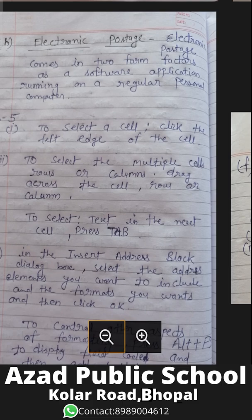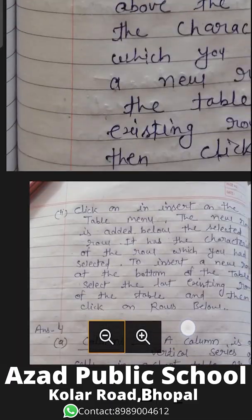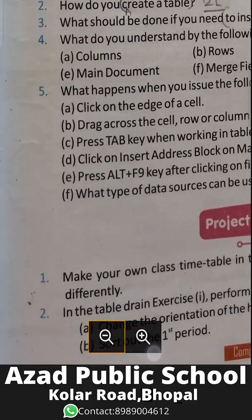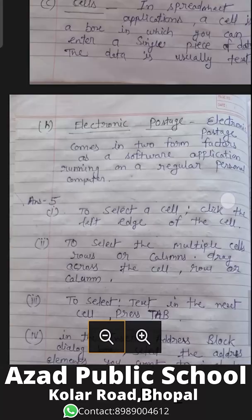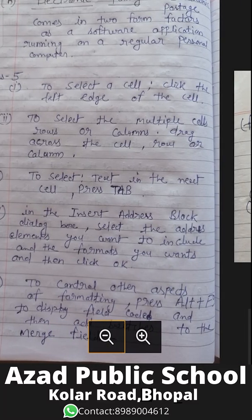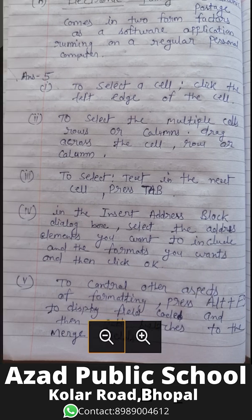Electronic postage comes in two form factors: as a software application running on a regular personal computer. The next question: what happens when you issue the following commands? To select a cell, click the left edge of the cell. To select multiple cells, rows, or columns, drag across the cell, row, or column. To select text in the next cell, press Tab.